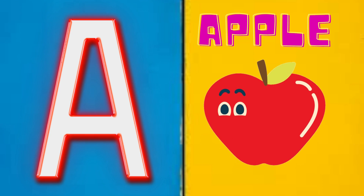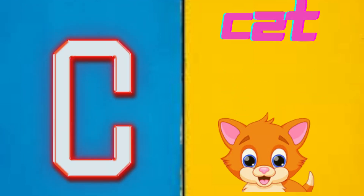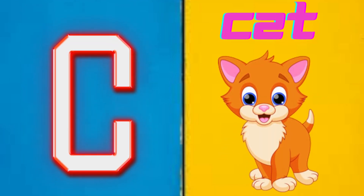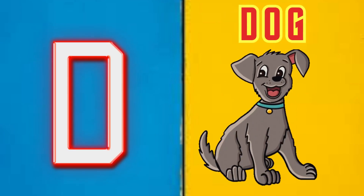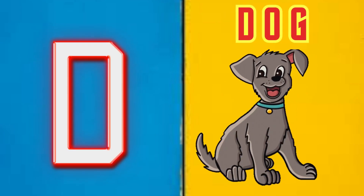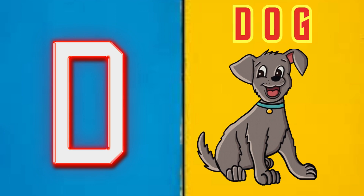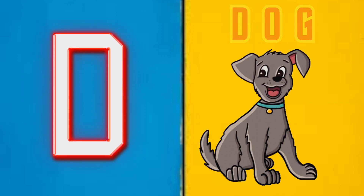A is for Apple, A-A-Apple. B is for Ball, B-B-Ball. C is for Cat, C-C-Cat. D is for Doll, D-D-Doll.